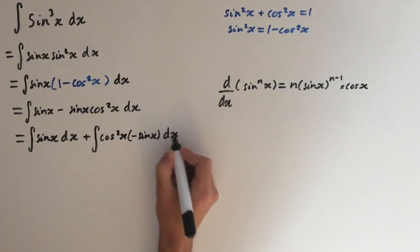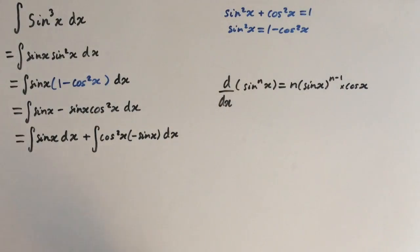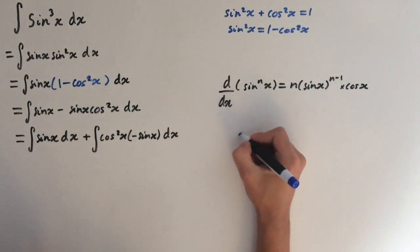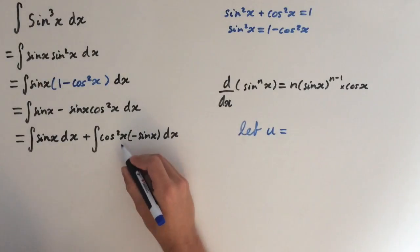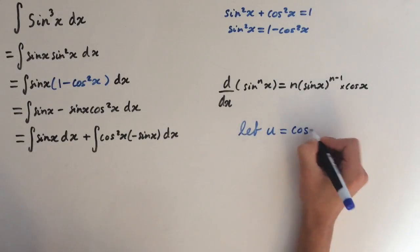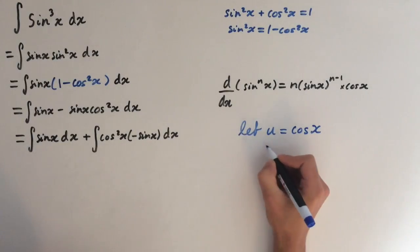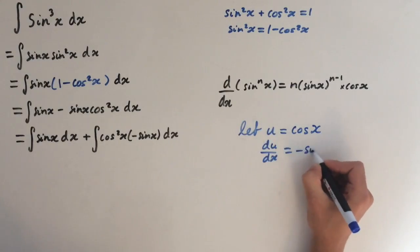I've done this very deliberately but I'll show you in a second. So for this integral we let u equal cosine of x and now differentiate it. So du/dx equals minus sine of x.